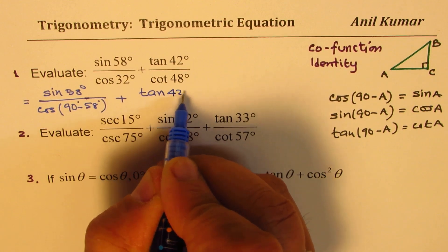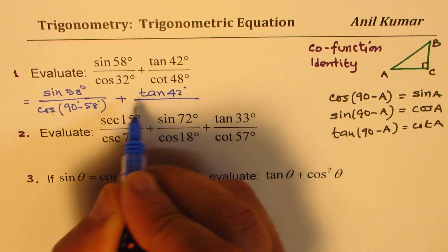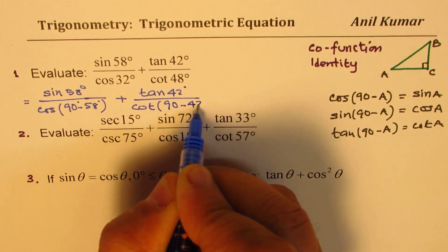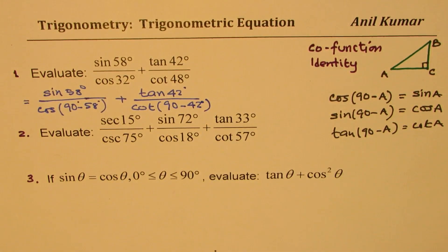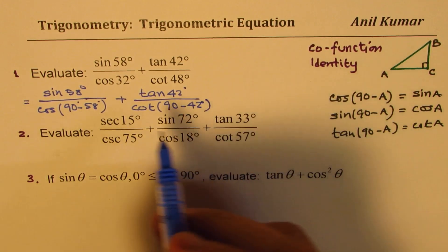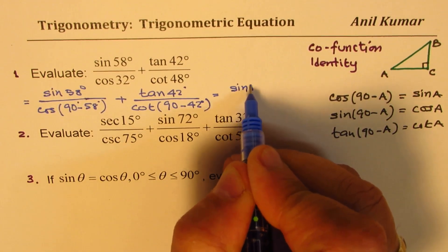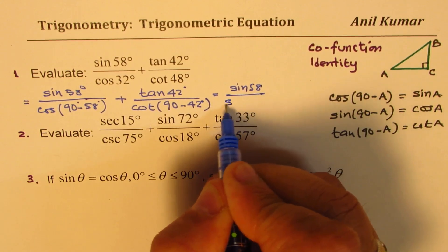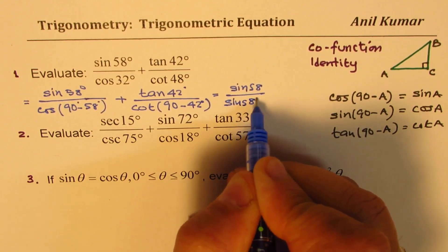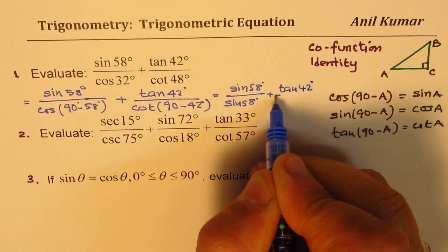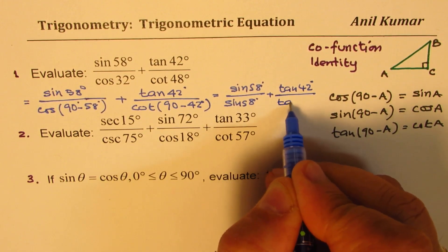So we have tan of 42 degrees in the numerator. So we have cot of 90 minus 42 degrees. Correct? So that gives you 48. And since these are equal, so we get basically sine of 58 over sine of 58 degrees plus tan of 42 over tan of 42 degrees.